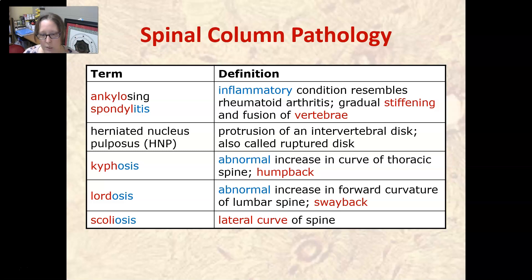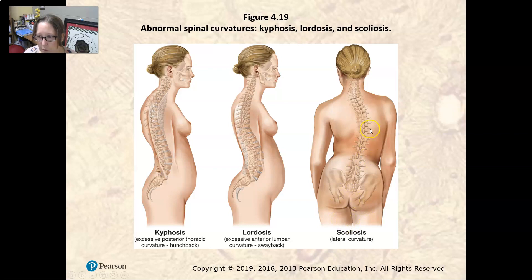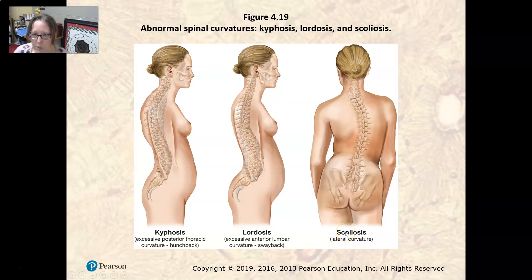Scoliosis is a lateral curve of the spine, kind of an S-shape of the spine that's abnormal — it should be pretty straight. So here is kyphosis, or humpback. We have lordosis, or this excessive anterior curvature, so there's too much curve. And then scoliosis has a lateral curvature of the spine. So: hunchback, swayback, and scoliosis — an S-shape that is lateral.